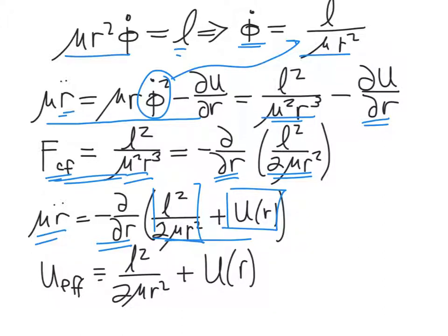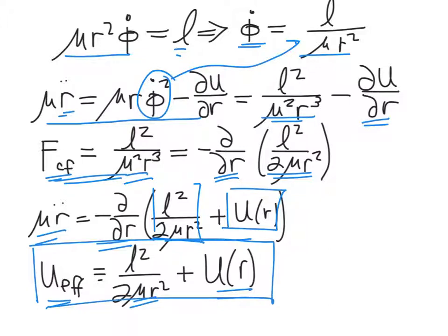We can define a new effective potential for the system, U effective, as the sum of these two things: L squared over 2 mu r squared, plus the original potential energy function. As far as the dynamics is concerned, the system has this new effective potential. This centrifugal term wants to drive the particles away from one another, while very often the original potential will want to pull the two particles together.